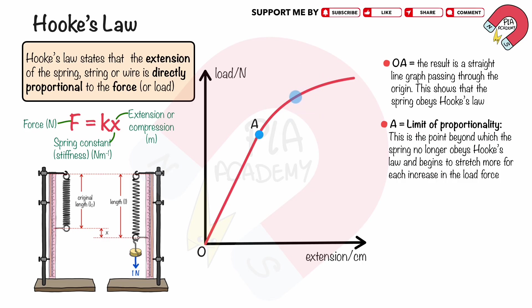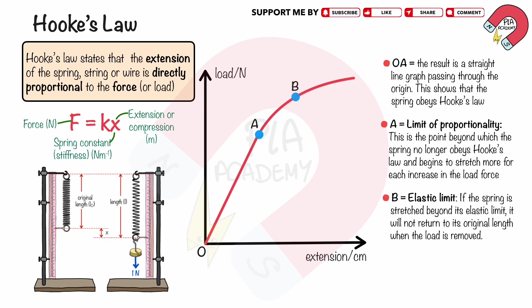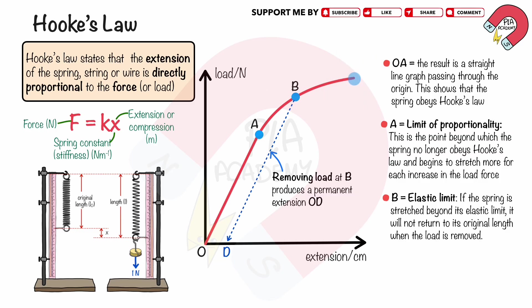Point B is called the elastic limit. If the spring is stretched beyond its elastic limit, it will not return to its original length when the load is removed. If the load is removed at B, it produces a permanent extension O-D. Between points A and C, the spring does not obey Hooke's law.